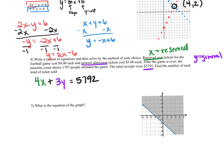For the total ticket count equation, the reserve seats plus general seats had to equal 1,787. One way to solve — and probably the easiest method — is through substitution, because we can isolate x. Subtracting y from both sides gives x equals 1,787 minus y. I'll plug that back into my money equation, so I have 4 times (1,787 minus y) plus 3y equals 5,792. Everything is now written in terms of y.